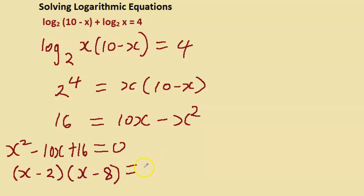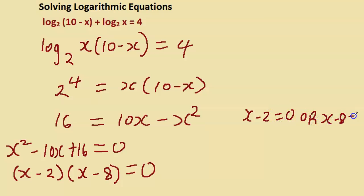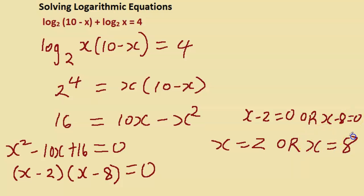To solve this we equate both brackets to zero: x minus 2 equals zero, and x minus 8 equals zero. Solving, x equals positive 2 or x equals positive 8. Those are our solutions.